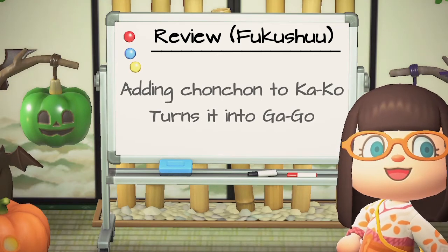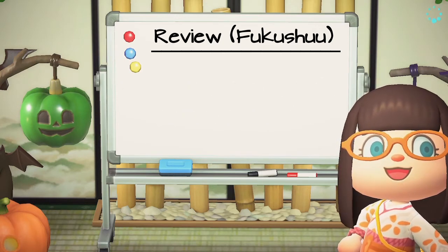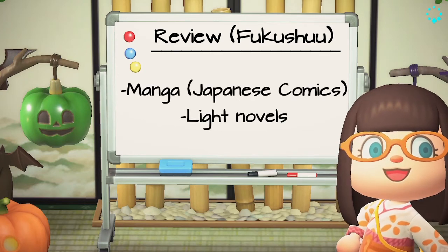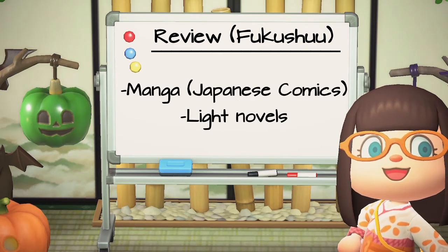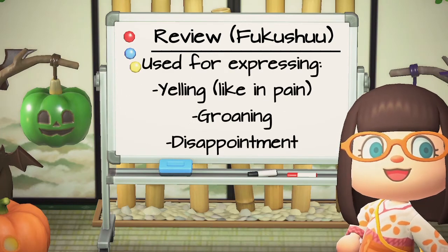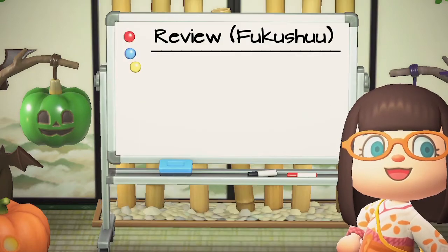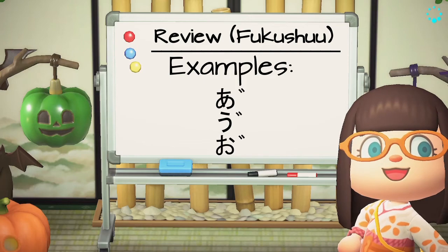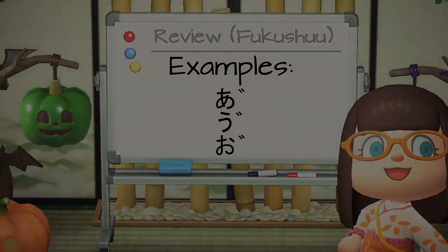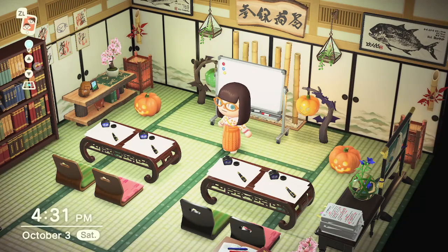In case you're wondering, the chonchon is usually not added to the hiragana group a through o. Sometimes you may see it in a manga, which is Japanese comics, or Japanese light novels, but it's usually used to express a yelling or groaning sound. It will not be used for an actual Japanese word. And that concludes the explanation for what a dakuten is — also called tenten or chonchon.